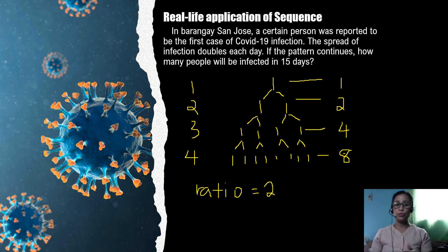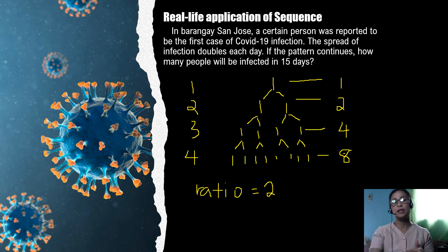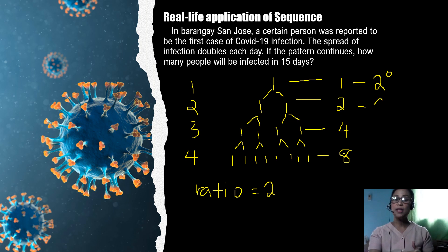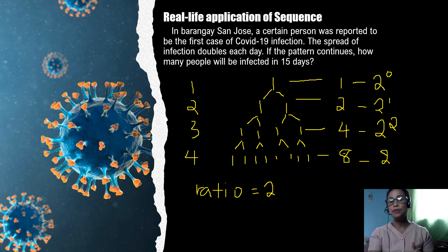The ratio two has a great impact in solving our problem. Let's express one, two, four, eight in exponential form using base two. One is the same as two raised to zero. Two is the same as two raised to the first power. Four is the same as two raised to the second power. And eight is the same as two raised to the third power.